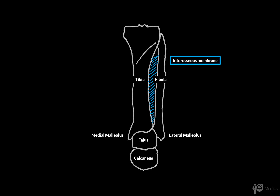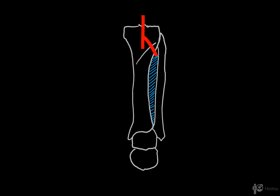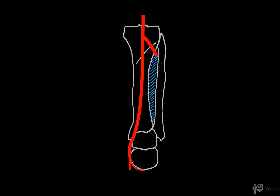The popliteal artery comes down and gives off the anterior tibial artery while continuing as the posterior tibial artery. So both the anterior and the posterior tibial arteries are terminal branches of the popliteal artery. The posterior tibial artery descends between the deep flexors and the soleus muscle, then curves posteriorly to the medial malleolus, where it goes to the plantar surface of the foot and divides into two terminal branches: the medial plantar artery and the lateral plantar artery. The posterior tibial artery supplies mainly the muscles of the posterior compartment of the leg by giving off some side branches.